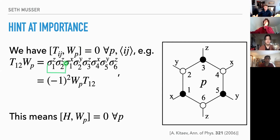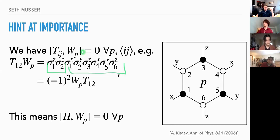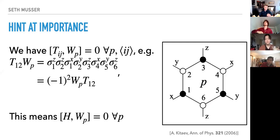All of these hopping operators commute with the plaquette operators — the Ŵ operators. You can see this directly: you write out Ŵ, look at one hopping operator, and you get a minus sign when you commute σ₁ through and another minus sign for σ₂, so the signs cancel. This means we have an infinite family of conserved quantities W_P. W is Hermitian and squares to one, so we have plus or minus ones on every plaquette that are conserved. That's a hint that the model might be interesting.